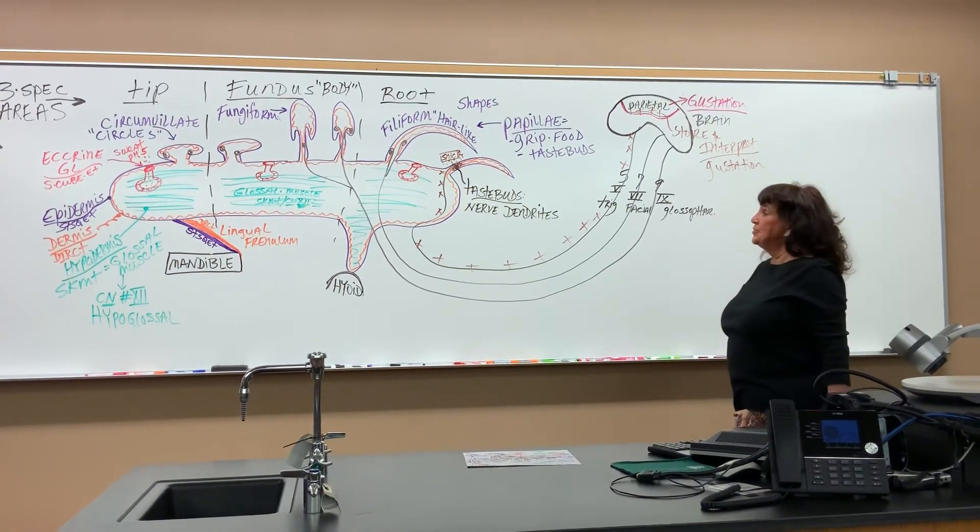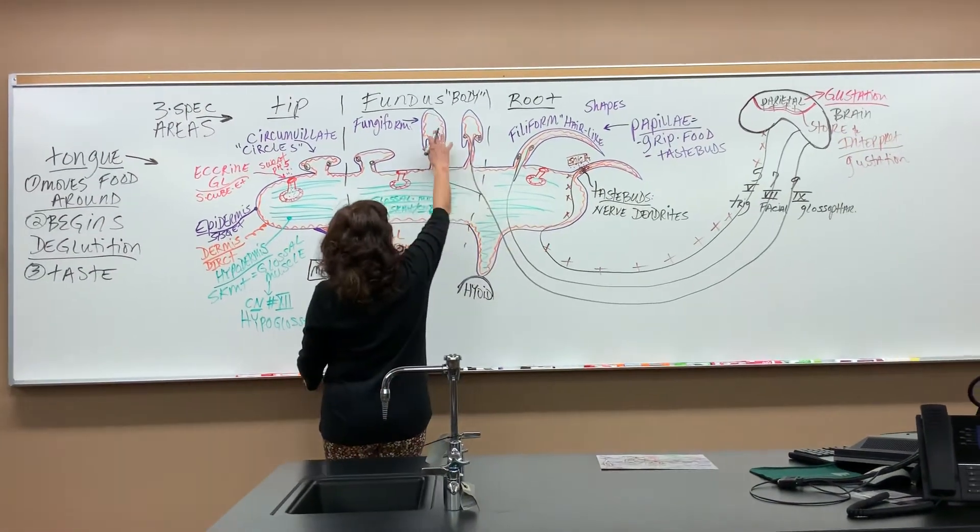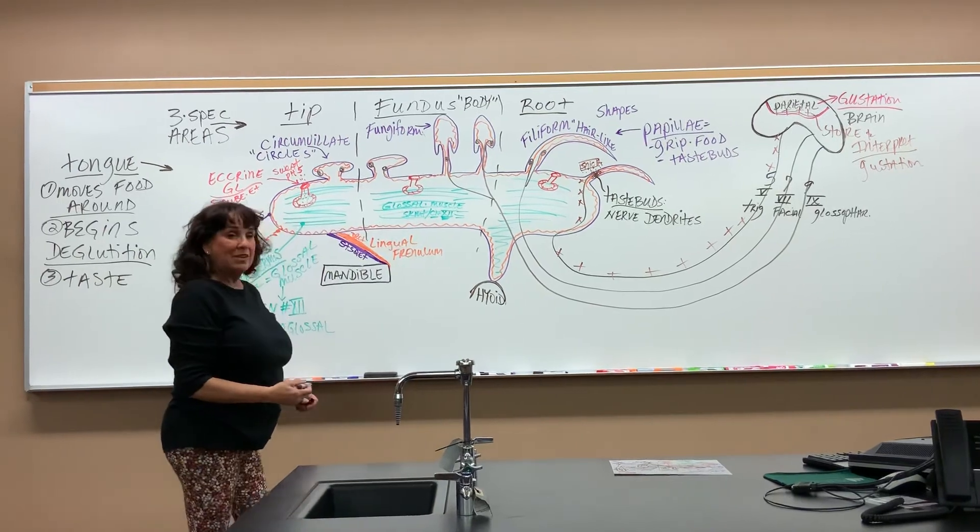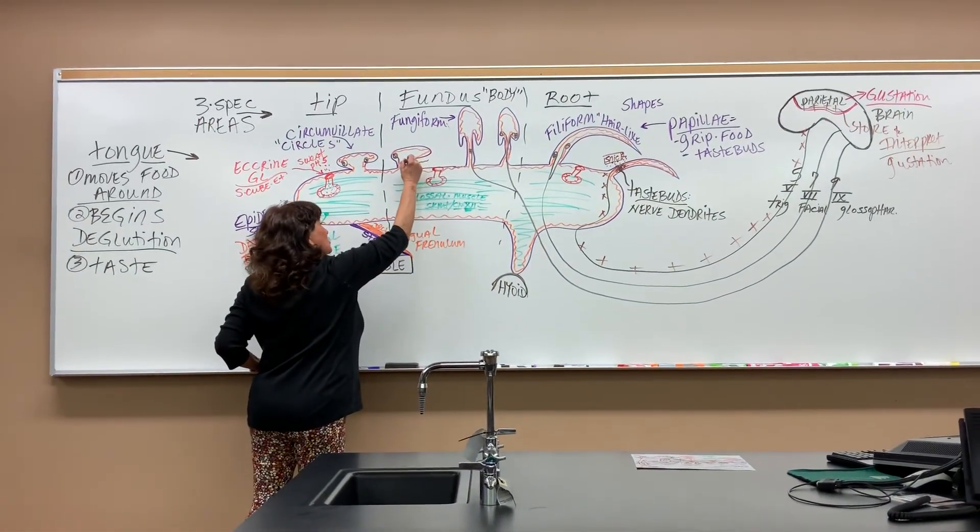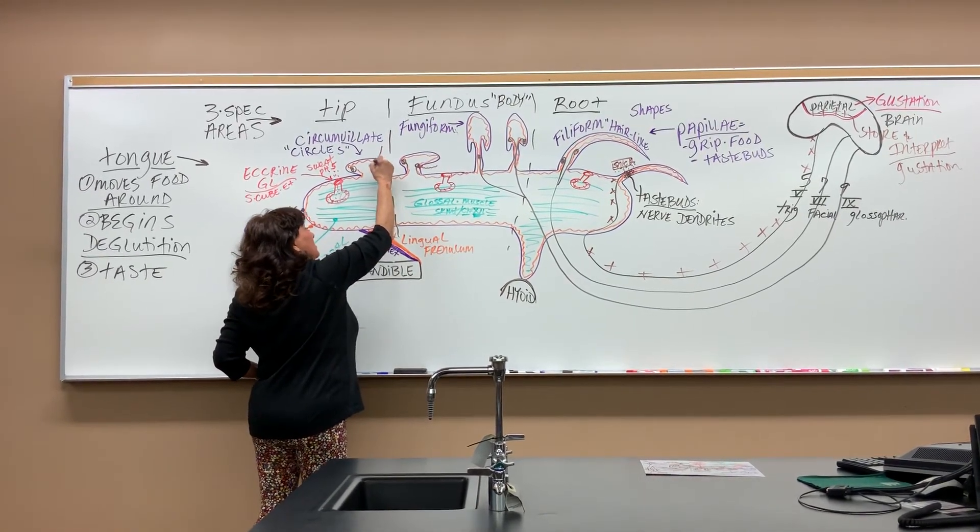That's where they all go. Nerves 5, 7, and 9 come in here, branch off, and go up into these papillae to make your taste buds. The juices from your foods have to go in here, diffuse in, and then hit the dendrites.